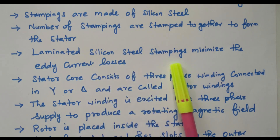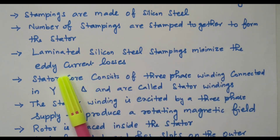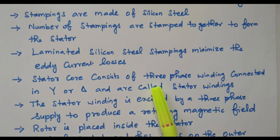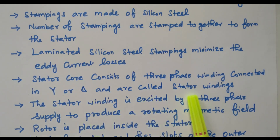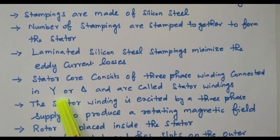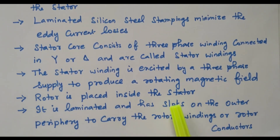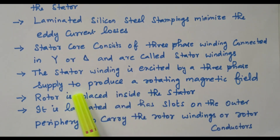Laminated silicon steel stampings minimize eddy current loss — that is the reason we go for lamination and stamping. The stator core consists of a three-phase winding connected in either star or delta, called the stator winding. This stator winding is excited by the three-phase supply to produce the rotating magnetic field.